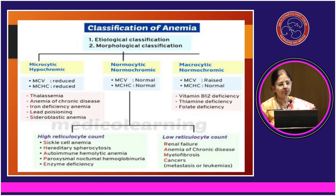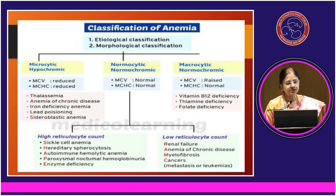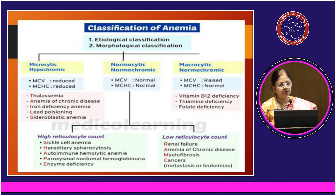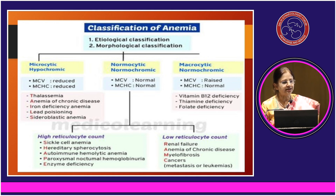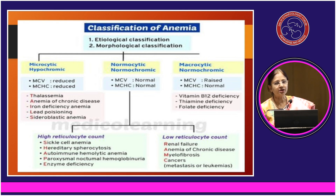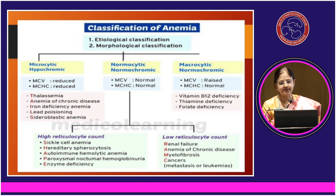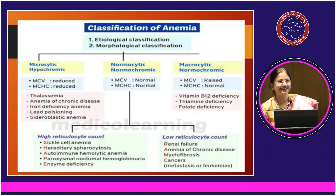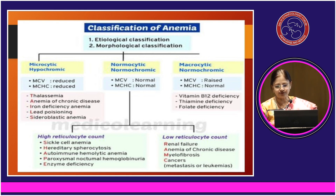If it is normocytic normochromic with a high reticulocyte count, the different causes could be sickle cell anemia, hereditary spherocytosis, autoimmune hemolytic anemia, paroxysmal nocturnal hemoglobinuria, and enzyme deficiency — the mnemonic comes out to be SHAPE. If it is low reticulocyte count, the causes could be renal failure, anemia of chronic diseases, myelofibrosis, or cancers — the mnemonic comes out to be RAMC. If it is macrocytic, it is mostly due to vitamin B12 deficiency, thiamine deficiency, and folate deficiency.